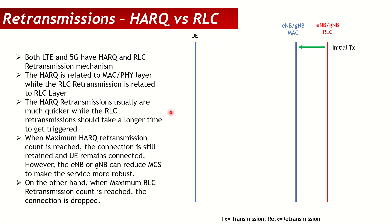Today we have another interesting topic — a question I've been getting a lot: HARQ versus RLC and how retransmissions work. Both LTE and 5G have RLC and MAC with similar retransmission mechanisms. In 5G there are some changes in the RLC layer, but as far as the retransmission mechanism is concerned, at a broader picture it is still similar. In this session we'll talk at the conceptual level, which applies to both LTE and 5G.